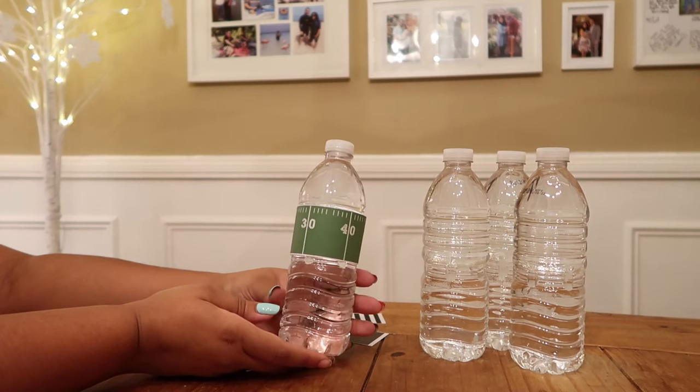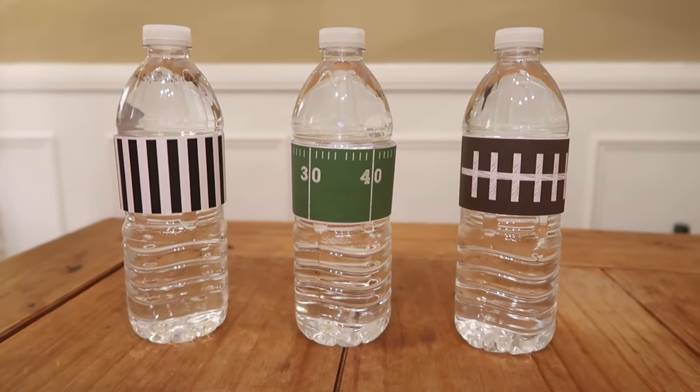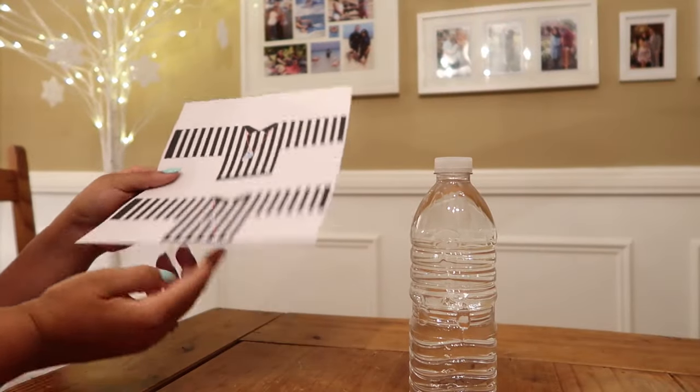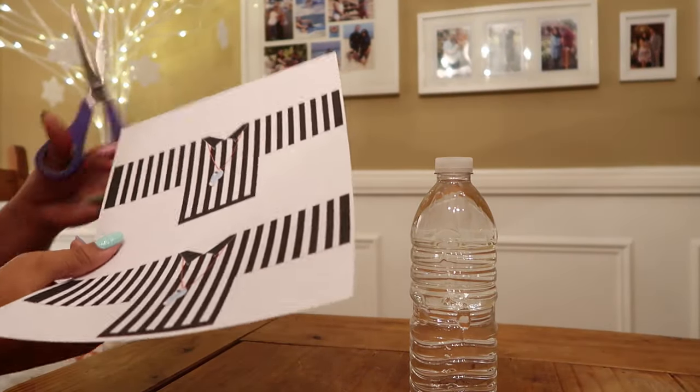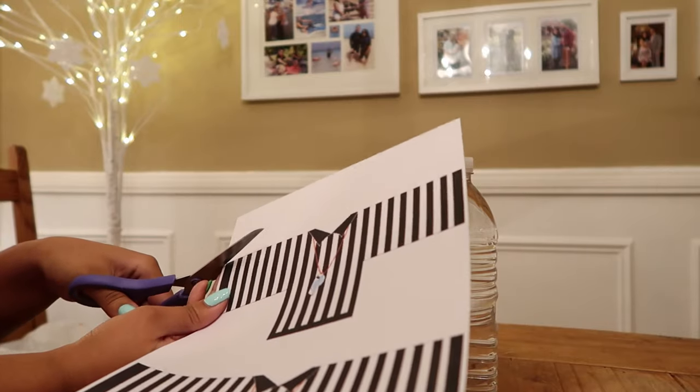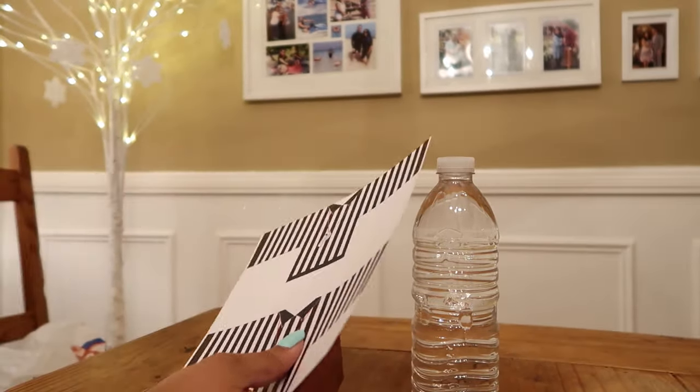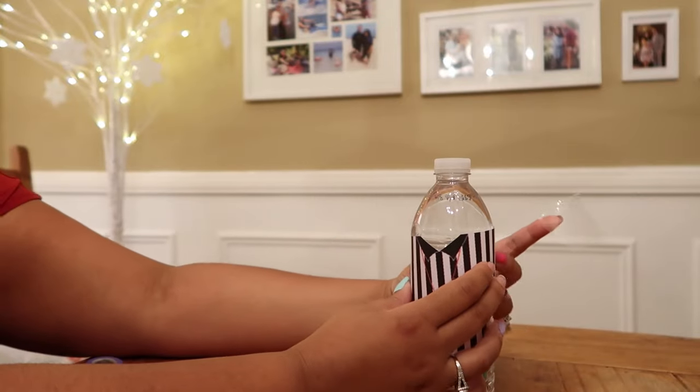Next water bottle is going to be the referee one, so all you have to do same as the other one is cut this out, wrap it around the water bottle where the sleeves meet, add your piece of tape.